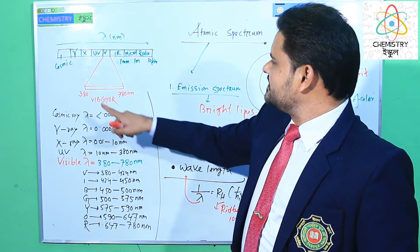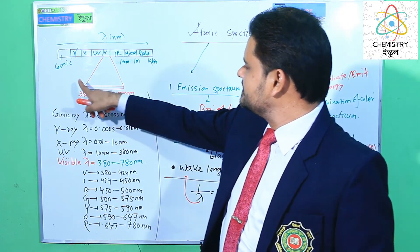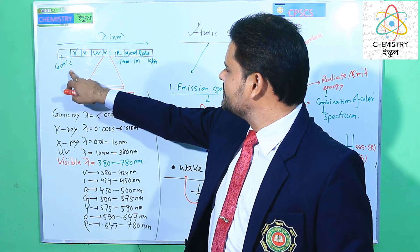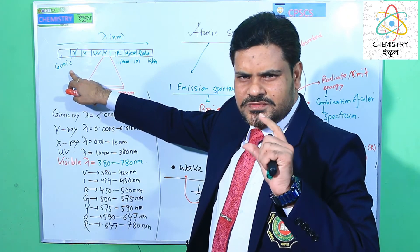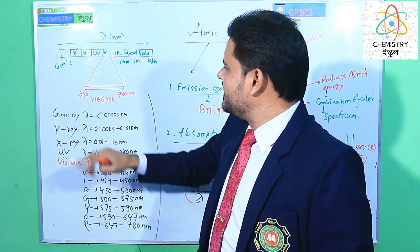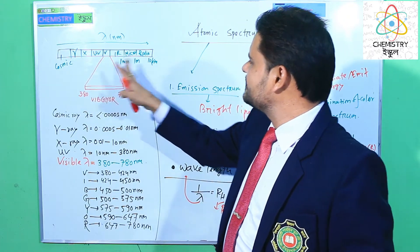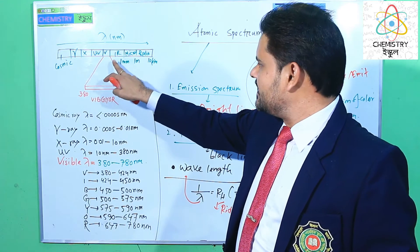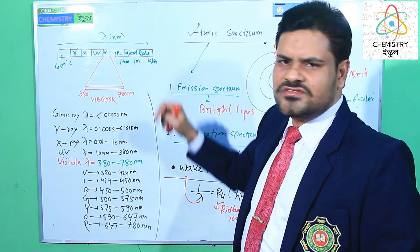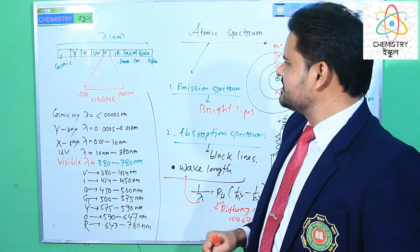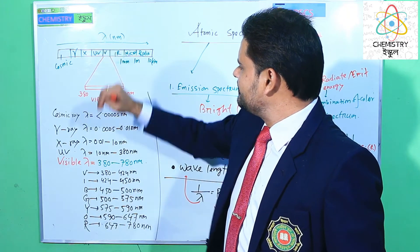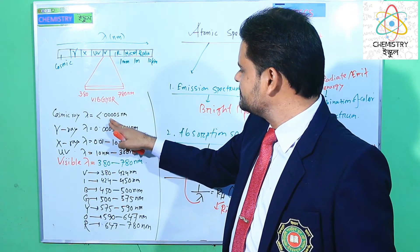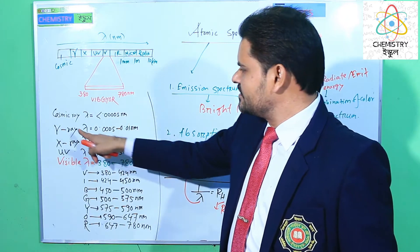There is a scale for the spectrum. The lowest wavelength is cosmic ray. And in increasing order: gamma ray, X-ray, ultraviolet ray, visible ray, infrared ray, microwave, and radio waves. If the wavelength is less than 0.0005 nanometers, it is the cosmic ray. When the wavelength is 0.005 to 0.01 nanometers, it is the gamma ray, then X-ray, then ultraviolet ray.